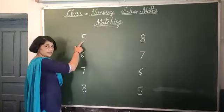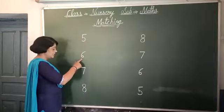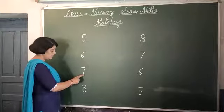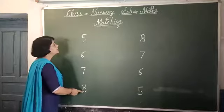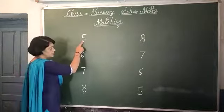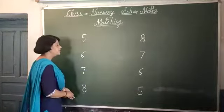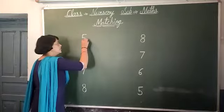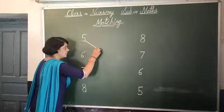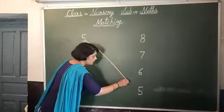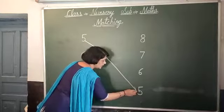This number 5, this number 6, this number 7, this number 8. This number 5, this number 5. Where is 5? This number 5. 5 ko 5 se kya karengi? Match karengi, Milan karengi.